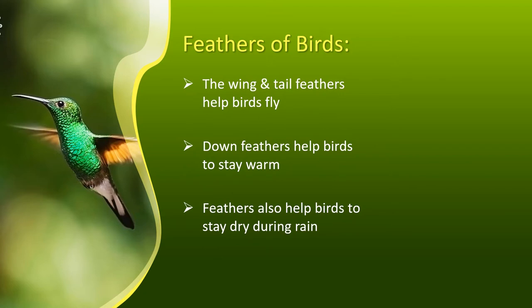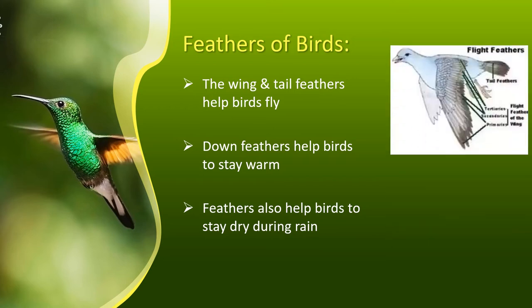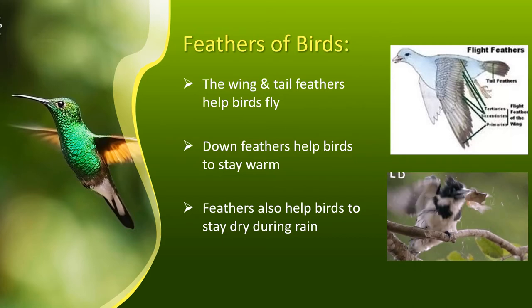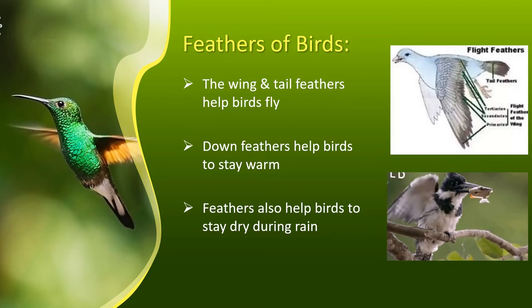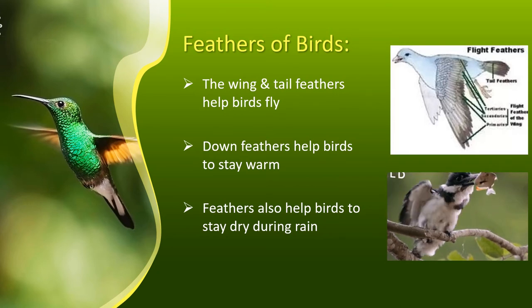The most beautiful thing about a bird is its feather. The feather is of two types: flight feather and down feather. The flight feather includes wing and tail feathers which help them to fly. The down feather helps the bird to keep warm. Feathers even act as a raincoat and keep the bird dry. Some feathers blend in with the surroundings and hide them from predators as well as help them to prey.